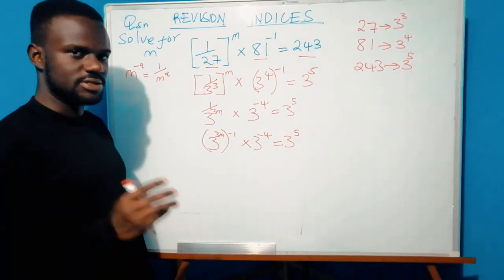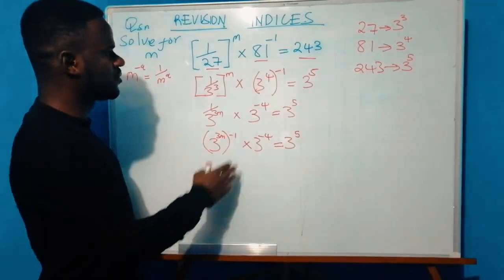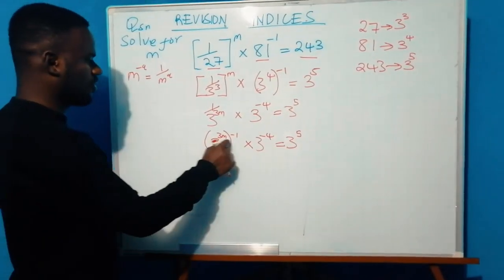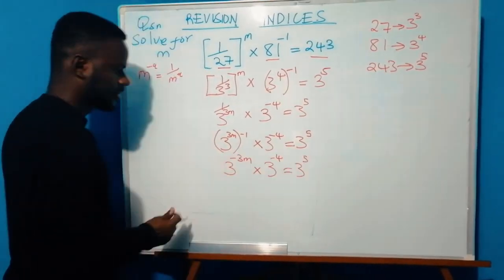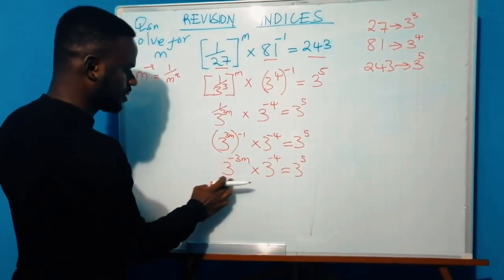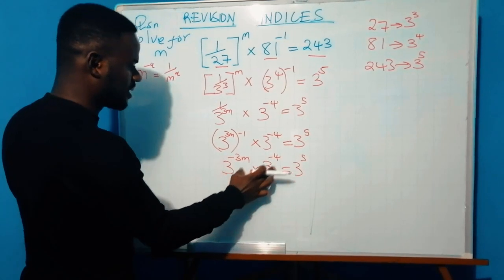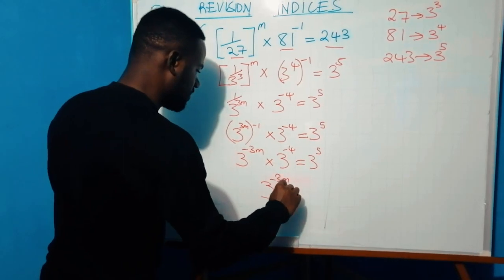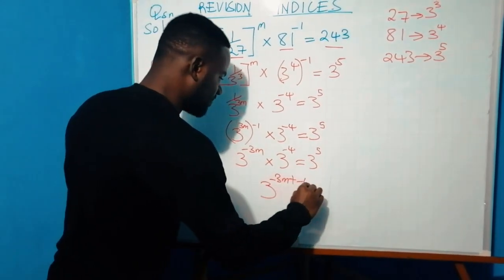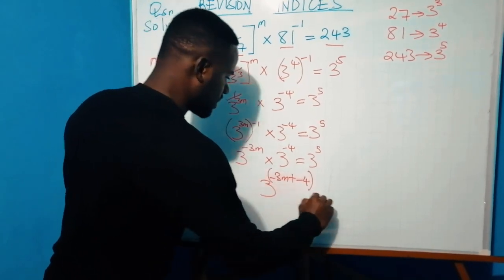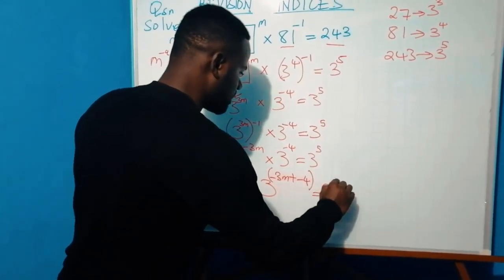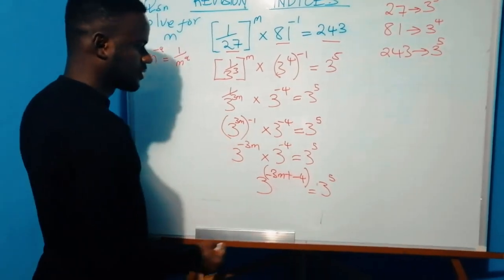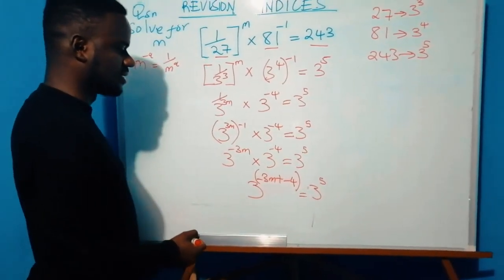You can restart the video if it was too fast. Opening up the bracket: when multiplying two indices with the same base, we add the powers. So we get 3 raised to power negative 3m plus negative 4, which equals 3 raised to power 5.